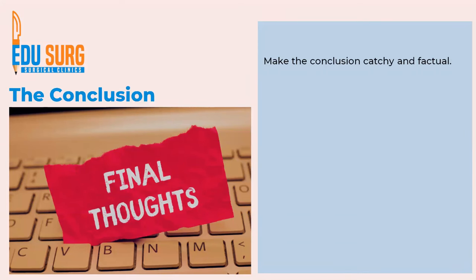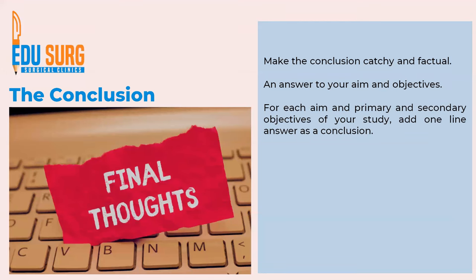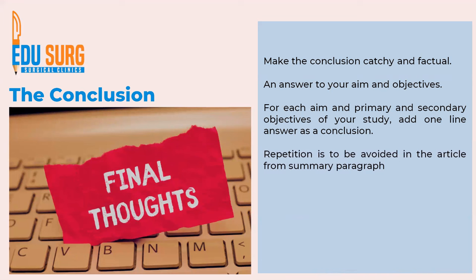Going to conclusion — probably the most important part but also the most easy part to write in your paper is the conclusion. This is because if you have given a very clear-cut aim and objective in your title, with primary and secondary objectives at the beginning of the article, the conclusion is simply an answer — final thoughts in a paper is what a conclusion is. For each aim, primary and secondary objective of a study, add one line as an answer and that becomes your entire conclusion. Remember that the conclusion should not be the same as the summary paragraph — repetition puts a very bad impression in the minds of reviewers and readers.